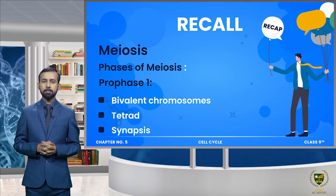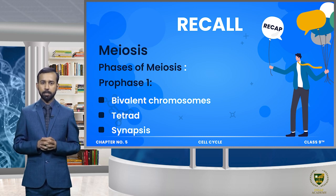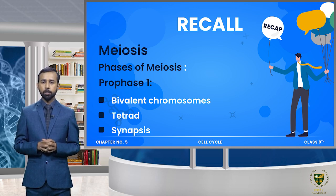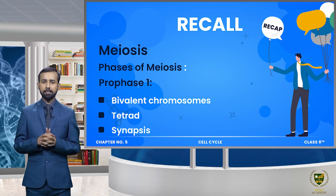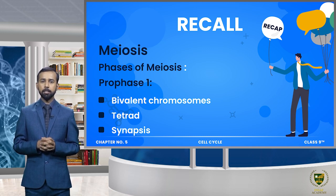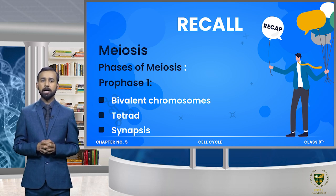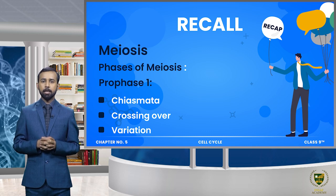Last lecture میں ہم نے meiosis 1 کی karyokinesis کی first phase یعنی prophase 1 کو explain کیا۔ Prophase 1 میں ہم نے بات کی کہ homologous pairs produce ہوتے ہیں اور یہ chromosomes سارے کے سارے align ہوتے ہیں through a process known as synapsis۔ Total جو ہمارے پاس ہے four chromosomes ہیں تو اس situation کو ہم نے نام دیا tetrad کا یعنی four homologous chromosomes ہے ہمارے پاس۔